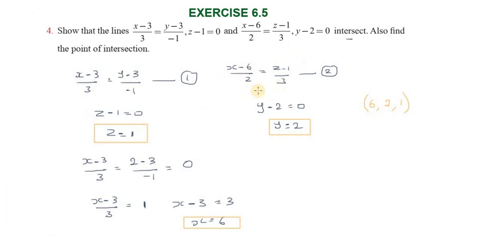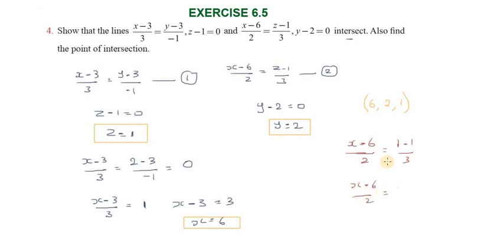To verify, substitute the values. For equation 2: x minus 6 by 2 — here x equals 6, so x minus 6 equals 0. For z: z equals 1, so 1 minus 1 by 3 equals 0 by 3 equals 0. So both sides equal 0, confirming x minus 6 equals 0 and x equals 6. The total points intersect at (6, 2, 1).